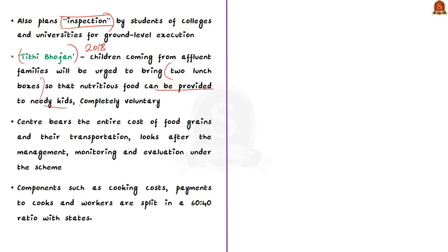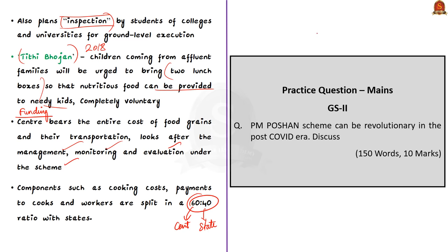Regarding the funding pattern, the centre bears the entire cost of food grains and their transportation, and also looks after management, monitoring, and evaluation. However, components such as cooking costs and payments to cooks and workers are split in a 60:40 ratio with states — 60% paid by the centre and 40% by the state. The midday meal scheme has remarkable achievements; several studies show its critical role in increasing school enrolment, preventing dropouts, eradicating hunger, and improving nutrition among children. This revamp is a welcome step in furthering the agenda on nutrition in India.